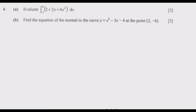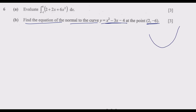Now let us look at question B: find the equation of the normal to the curve y equals x squared minus 3x minus 4 at the point (2, negative 6). What the question requires us to do is find an equation of a line that is normal — meaning perpendicular — to the tangent line at that point. If you have a curve and draw a tangent line at the point of tangency, the normal is the perpendicular line at that same point.